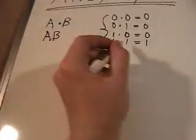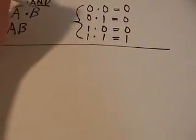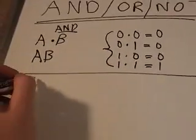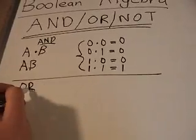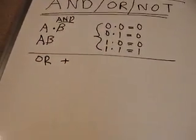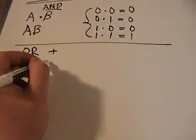That's AND. Now let's talk about our OR operator. OR is denoted using a plus sign. So for example, you can have A OR B.